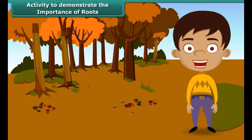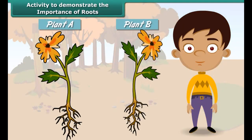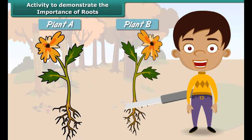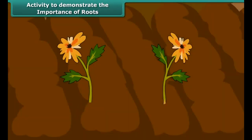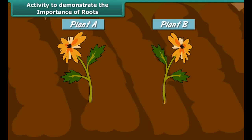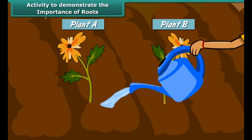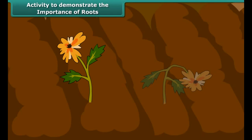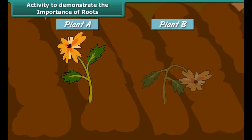Let us perform an activity to demonstrate the importance of roots. Take two plants, A and B. Cut off the roots of plant B, then plant both in soil and water them every day. After a few days, plant A appears as healthy as it was on the first day, whereas plant B appears wilted. This proves that roots absorb water and minerals from the soil and transport them to the other parts of the plant.